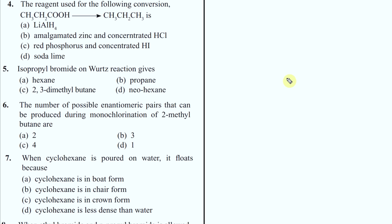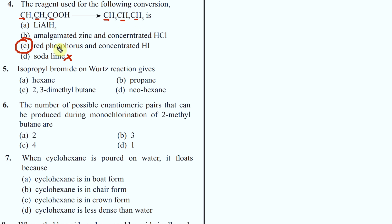Question 4 - the reagent used for conversion. Now let us look at the reaction. First thing you want to do is check if there is a COOH group. You always look at the number of carbons - 1, 2, 3. If one carbon less, it is decarboxylation. Otherwise this is a reduction reaction. You use red phosphorus and HI. Red phosphorus and HI converts double bond, triple bond, OH group, Cl group, COCl group - everything into the corresponding alkane.